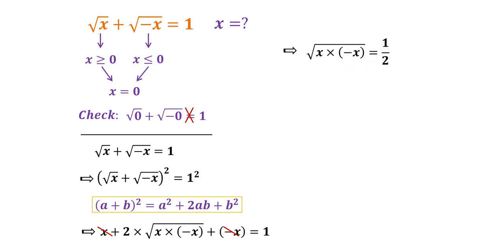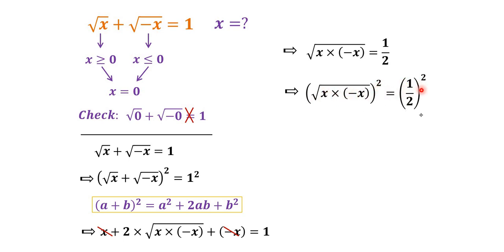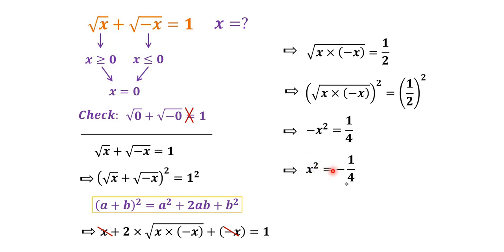We square both sides again: x times negative x squared equals 1 over 2 squared. We remove the radical, giving us negative x squared equals 1 over 4. Then x squared equals negative 1 over 4, so x equals plus or minus 1 over 2i. These are the two complex roots of this equation.